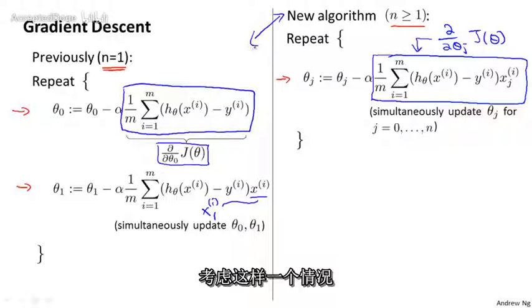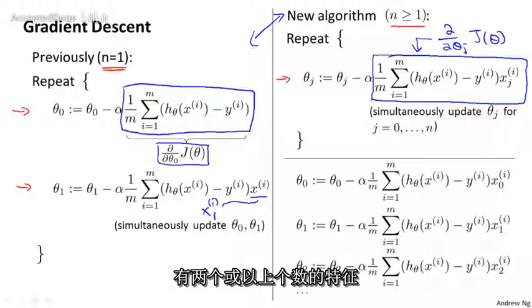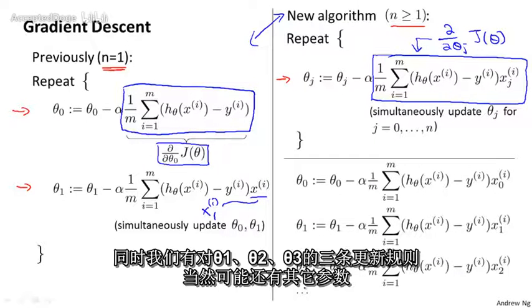Let's consider a case where we have two features or maybe more than two features. So we have three update rules for the parameters theta 0, theta 1, theta 2, and maybe other values of theta as well.